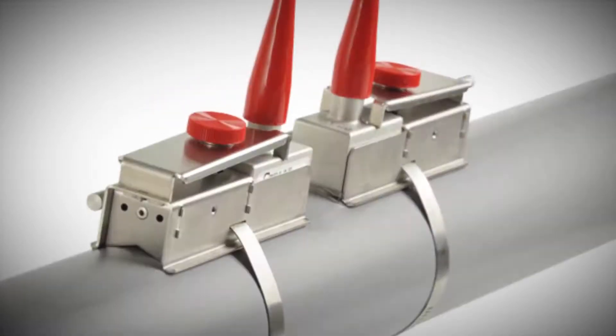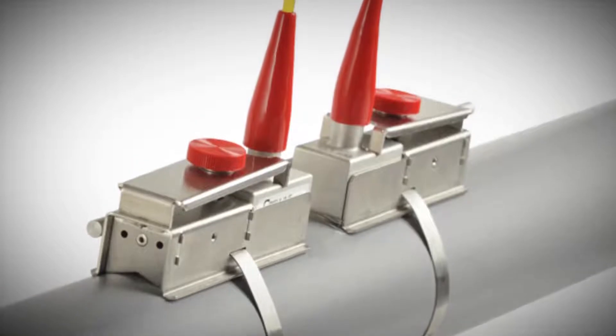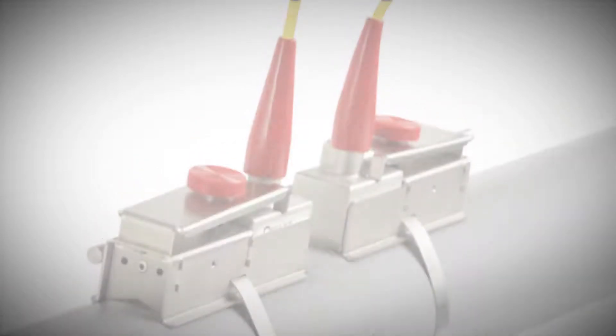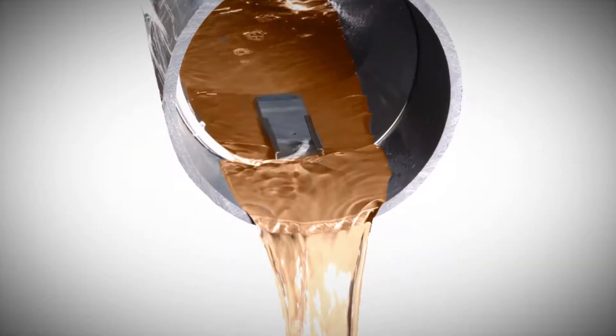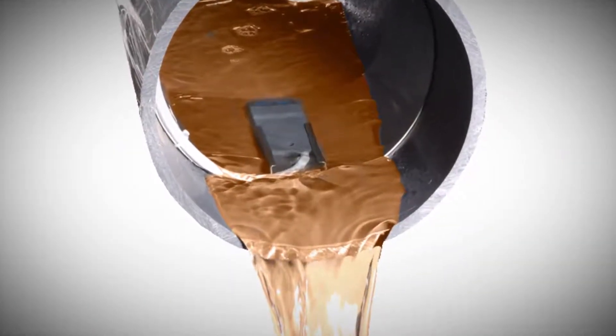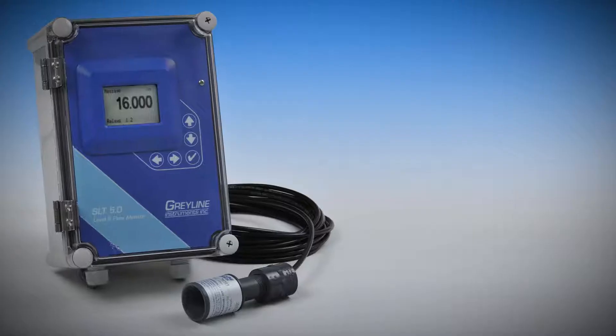Grayline provides accurate and easy-to-use instrumentation for a variety of applications including clamp-on flow measurement for full pipes, flow measurement for partially filled pipes, culverts, drains, and open channels, and level measurement and control.